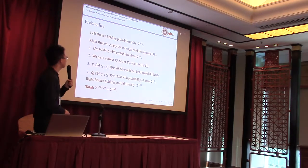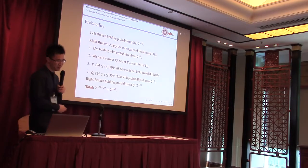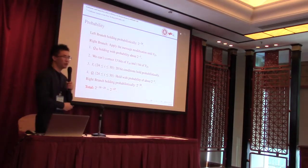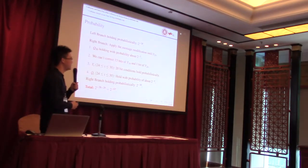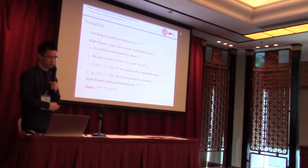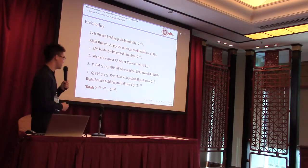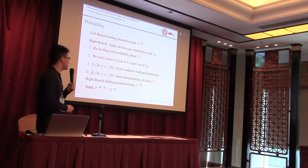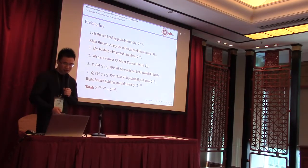I will give the probability of the collision attack on the first 30-step RIPEMD-160. For the left branch, we don't apply any message modification techniques, and it holds with probability 2 to the power minus 29. For the right branch, after applying the message modification techniques, it holds with probability 2 to the power minus 38. In total, the probability of our collision attack is 2 to the power minus 67.